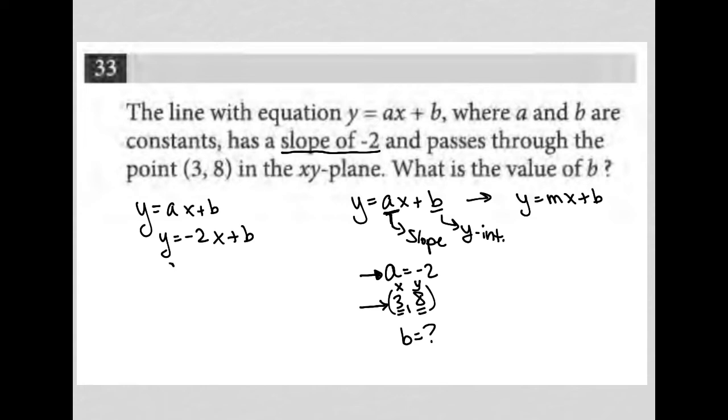So I'm going to replace y with 8. I'm going to replace x with 3. And I still have my b here. And now all I have left is to solve for b. So this becomes 8 equals negative 2 times 3 is negative 6, plus b, adding 6 to both sides here, leaves me with 14 is equal to b.